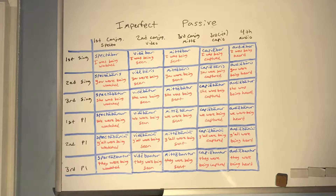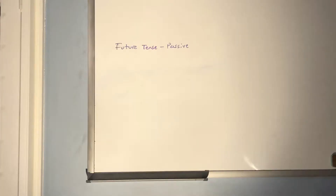Fourth conjugation imperfect passive with AUDIO: AUDIEBAR (I was being heard), AUDIEBARIS (you were being heard), AUDIEBATUR (she was being heard), AUDIEBAMUR (we were being heard), AUDIEBAMINI (y'all were being heard), AUDIEBANTUR (they were being heard). For all imperfect passive forms, it's a straight swap: remove the active personal ending and replace it with the passive ending.